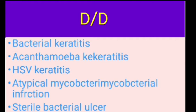The close differential diagnoses for fungal corneal ulcer are bacterial keratitis, acanthamoeba keratitis, HSV (herpes simplex virus) keratitis, atypical mycobacterial infection, and sterile bacterial corneal ulcer.